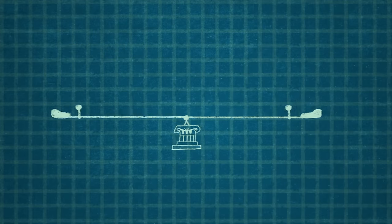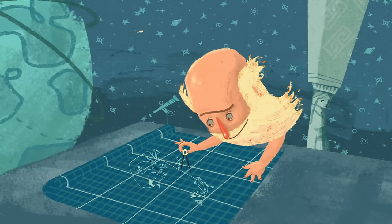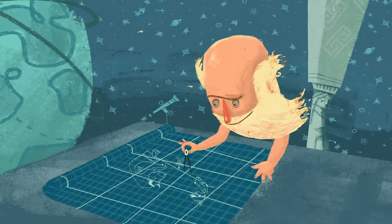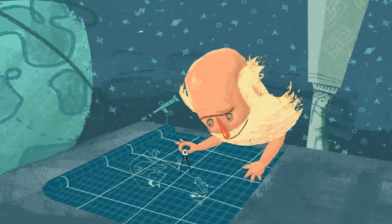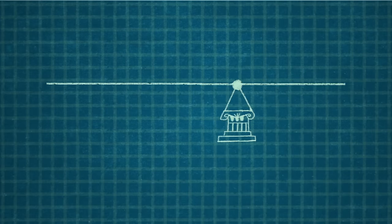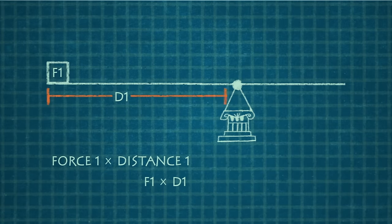In this case, your weight is the effort force, while your friend's weight provides the resistance force. What Archimedes learned was that there is an important relationship between the magnitudes of these forces and their distances from the fulcrum.